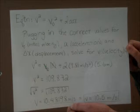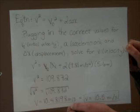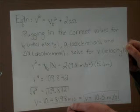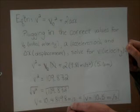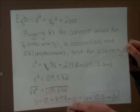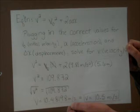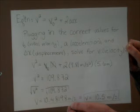So V squared equals 0, the initial velocity, plus 2 times the acceleration, 9.81 meters per second squared, times the displacement, 5.6 meters. So V squared equals 109.872 meters per second squared. Taking the square root of both sides, we can solve for velocity equaling 10.5 meters per second.